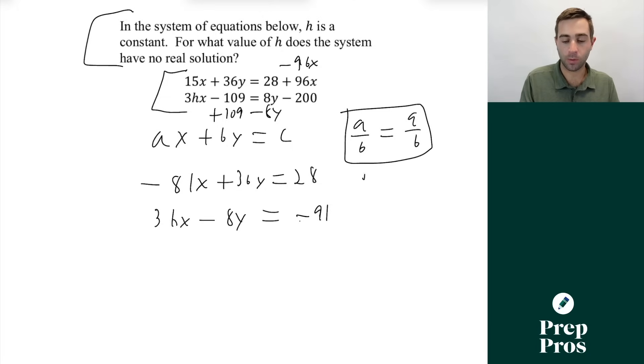And that will give us 3hx minus 8y equals our negative 91. Now all we have to do is set up this proportion. a is to b is a is to b. Remember it's ax plus by equals c. So we're simply going to do negative 81 over 36 equals 3h over negative 8. Now from here, all we have to do is cross multiply. And once we do, we'll find our correct answer of h equals 6.